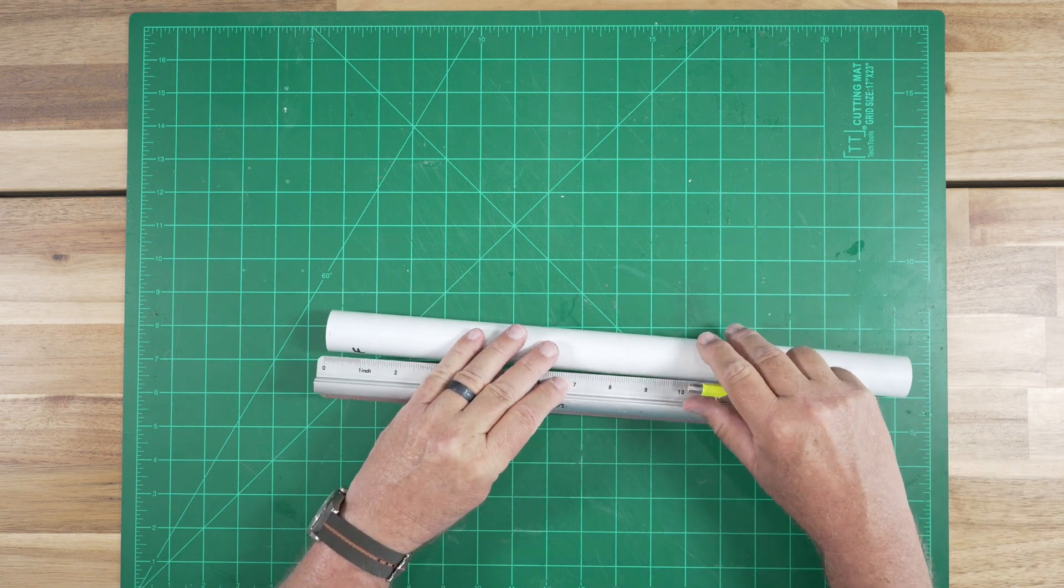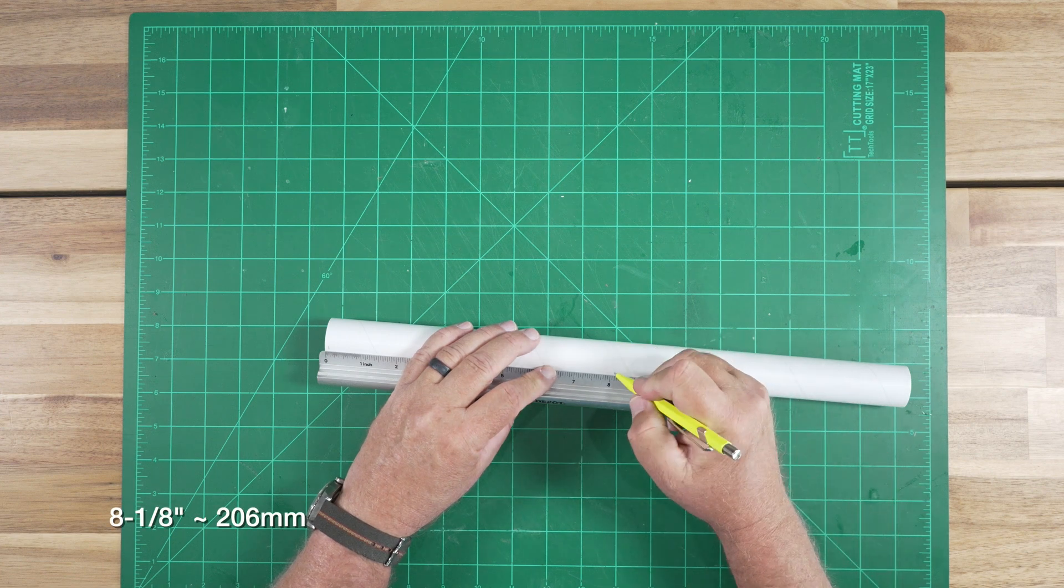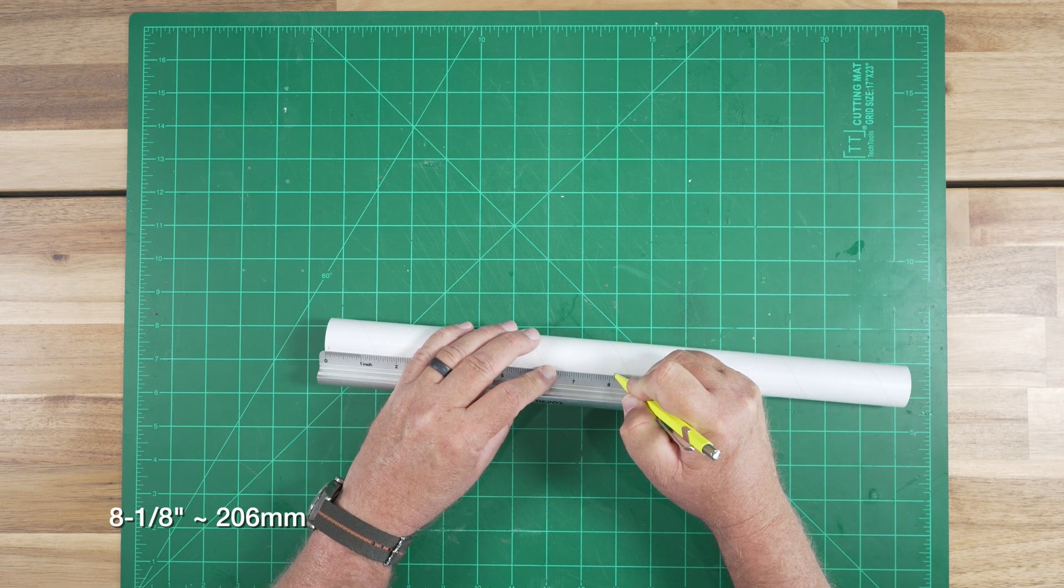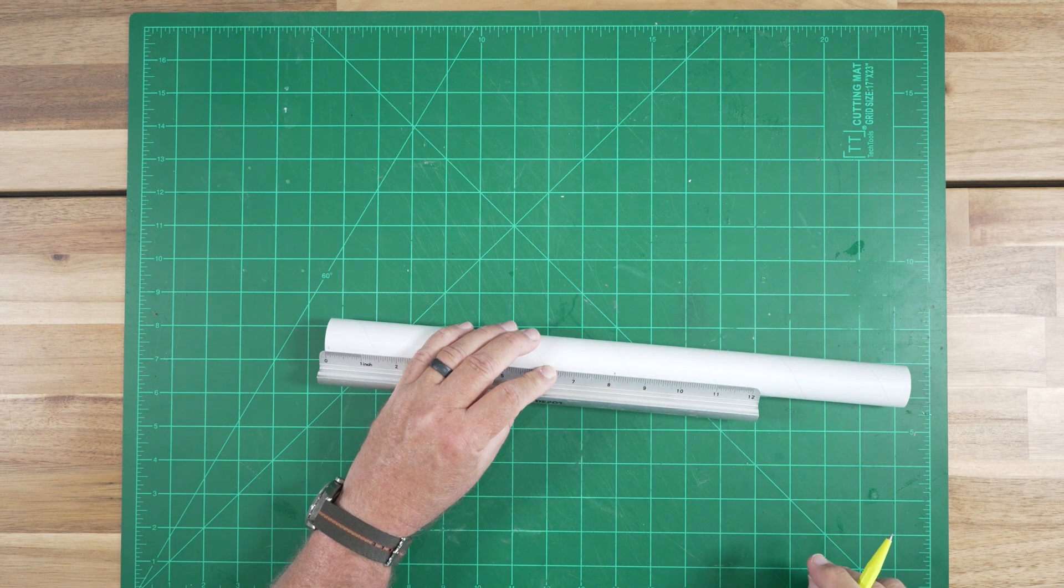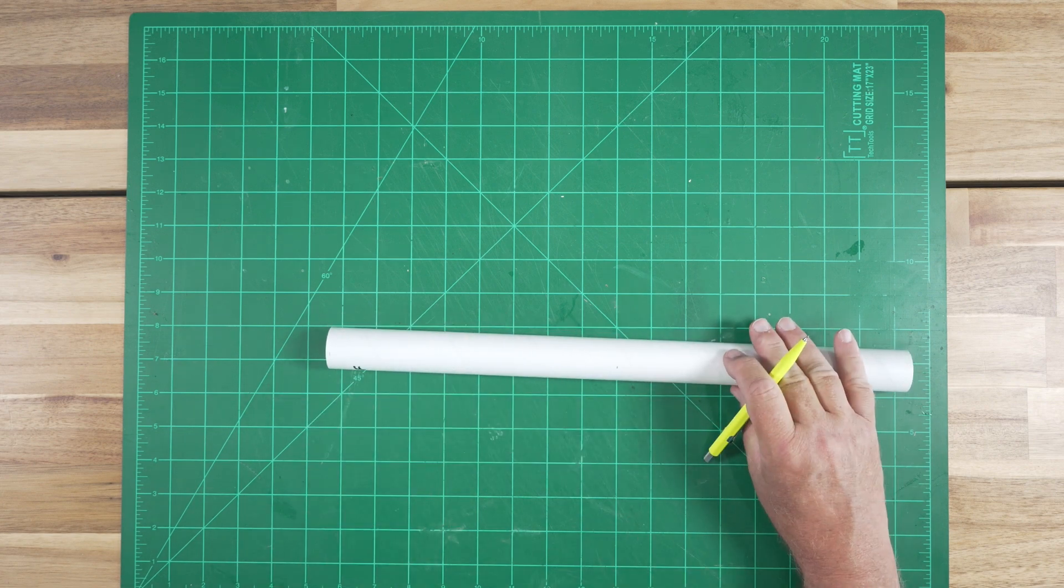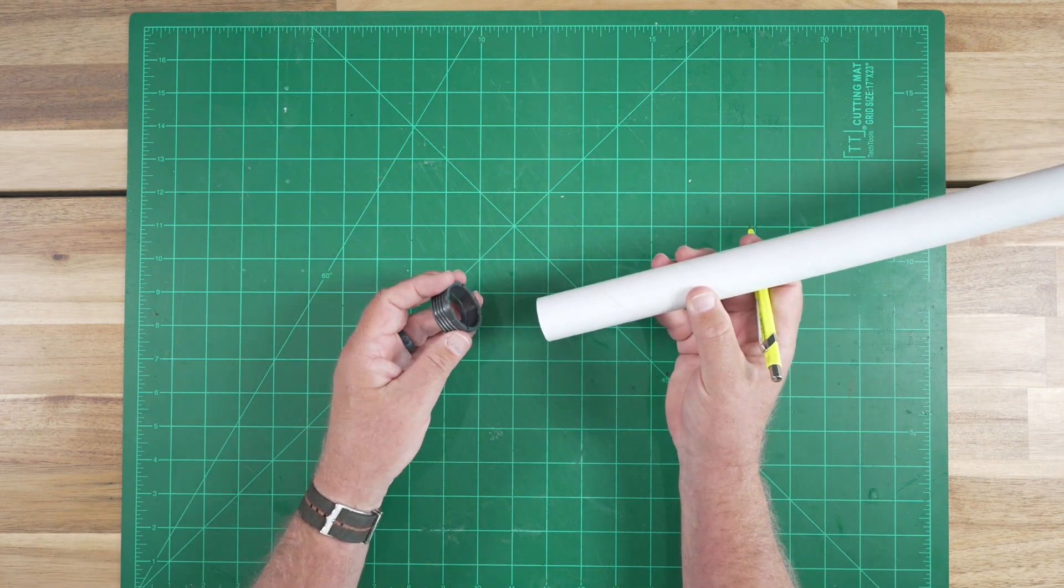The next mark will be 8 and 1/8 inches from the forward end, that is about 206 millimeters. And then the third mark will be placed at the aft end of the tube.